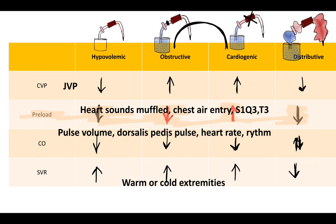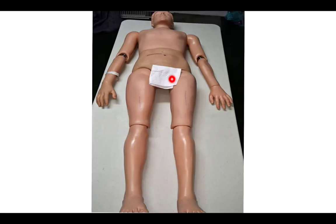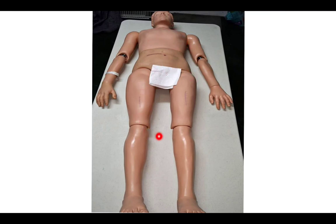In practice, everything happens simultaneously — team members are placing airways, IV lines, and central lines. At the decision-making point, gather all information: look at the neck veins, auscultate for heart sounds and air entry, assess peripheral pulses, and check whether extremities are warm or cold. Combining all this clinical information allows identification of the type of shock, followed by treatment per ATLS protocol.